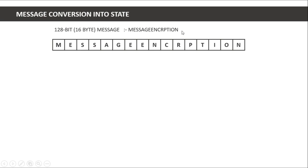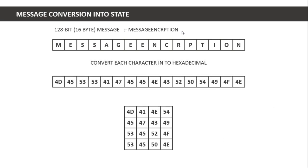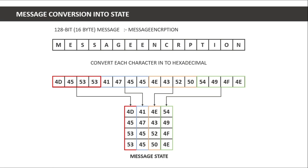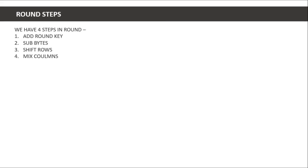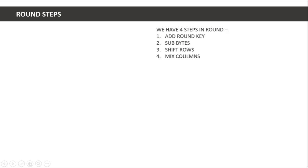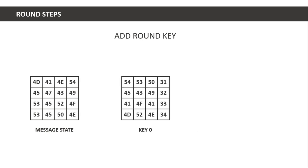For message conversion into state, we have 128 bits of message. We convert each character into hexadecimal — the same way we did for the key — and arrange it into a 4x4 message state. We have four steps in each round: add round key, sub byte, shift rows, and mix columns. I am covering mix columns last because it is the most complex operation.